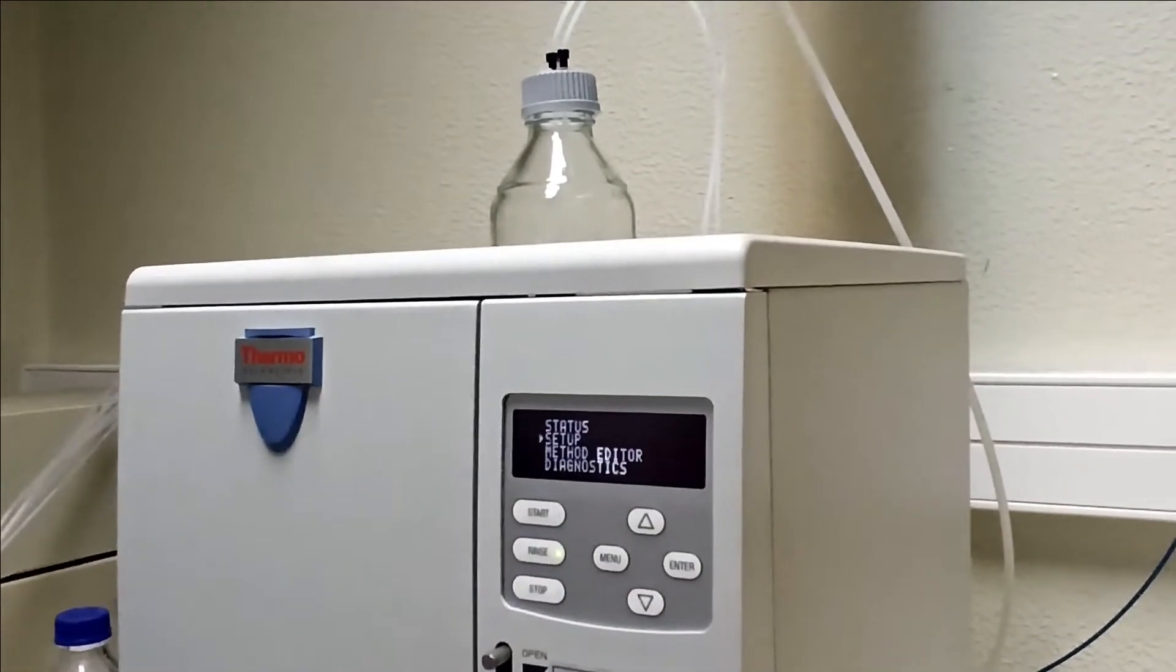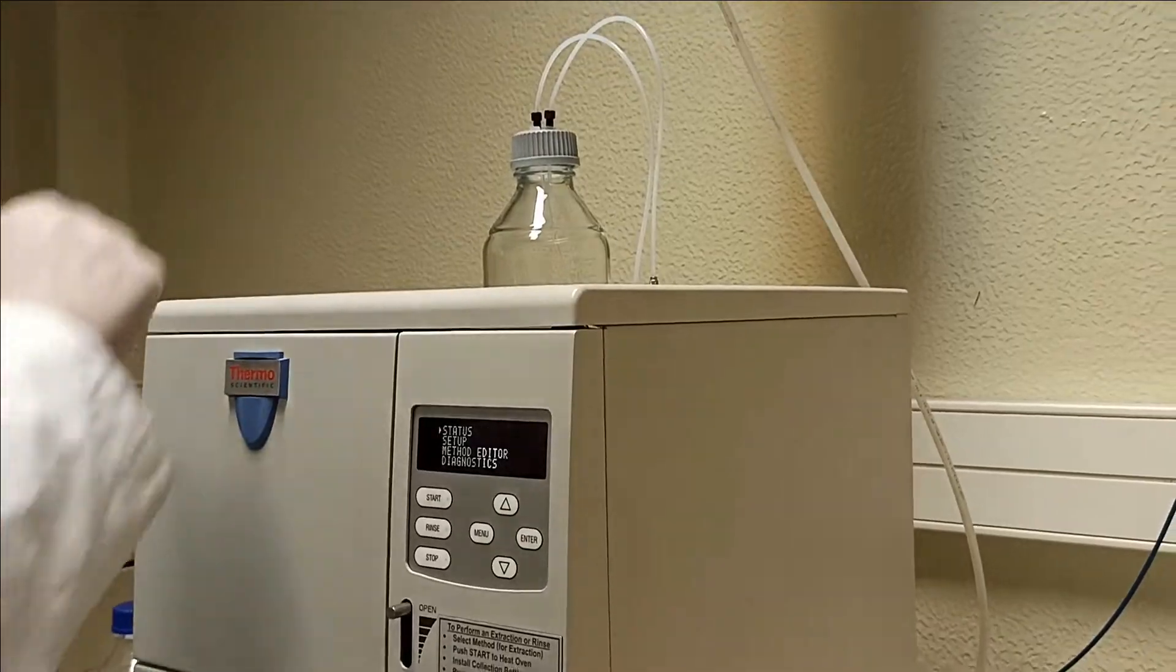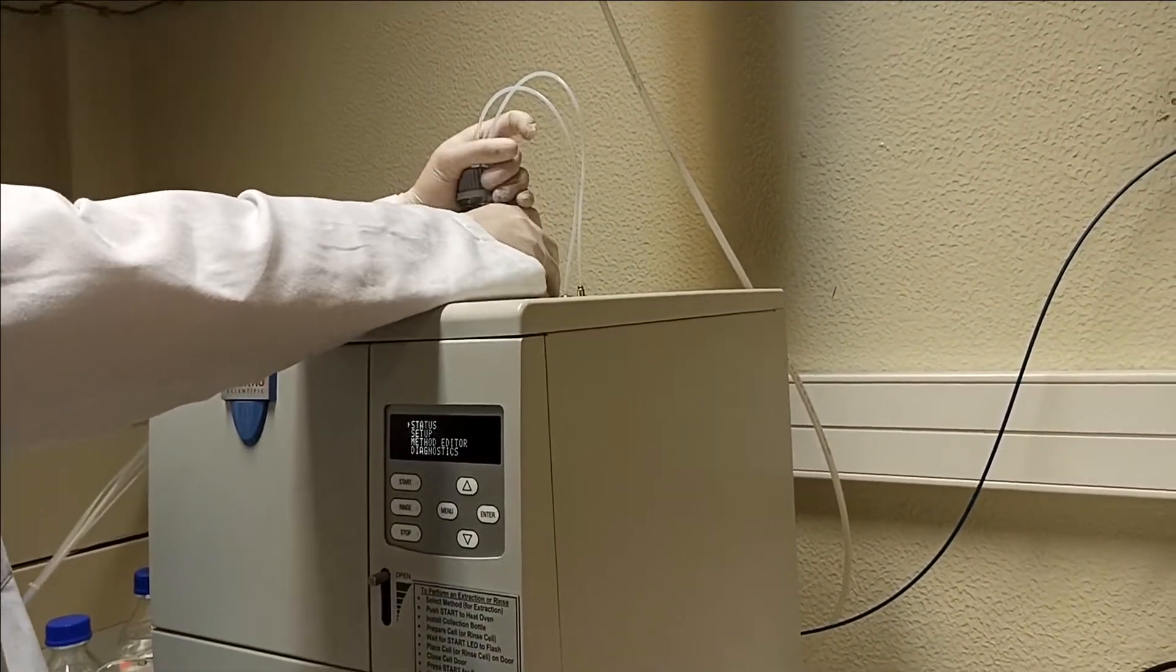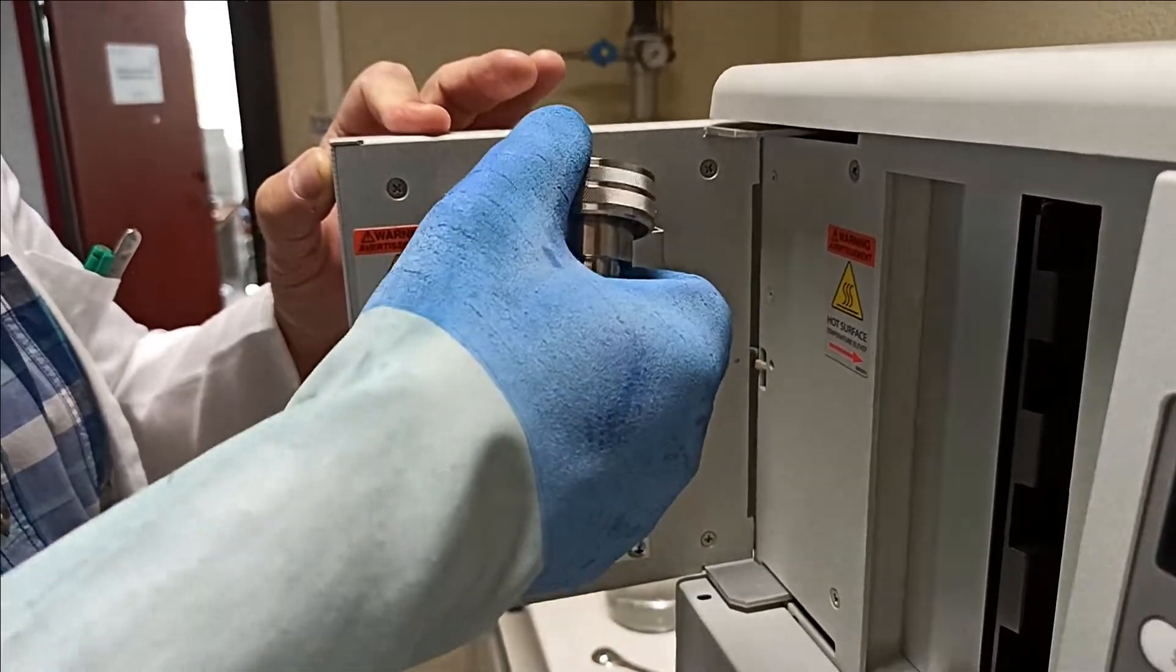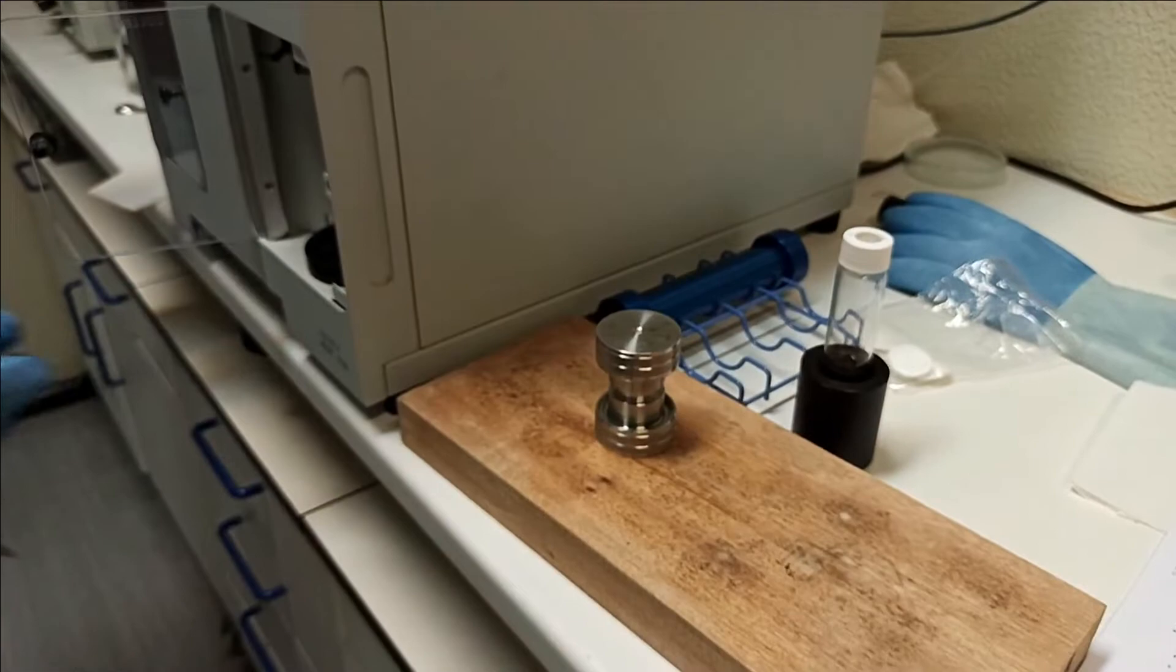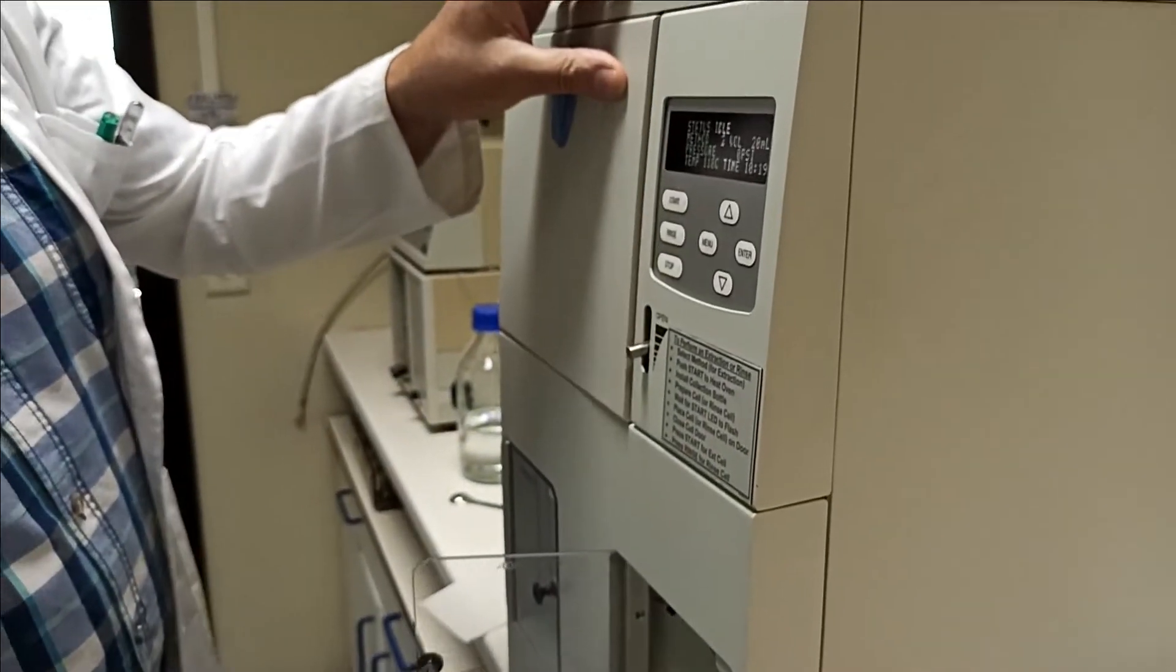So now we are ready for the second and third cycle. For these we will need to replace the solvent with hexane diethyl ether. Take out the sample cell, but make sure you are using gloves since the temperature of the cell is very hot.